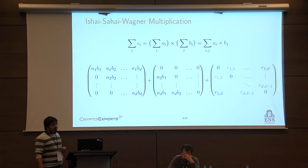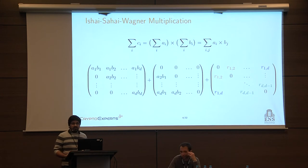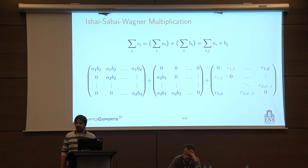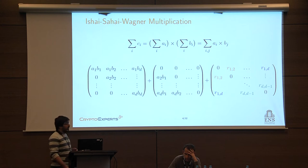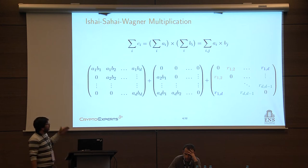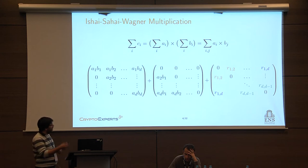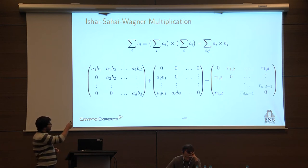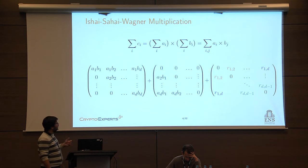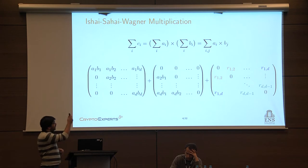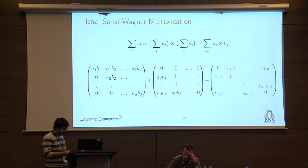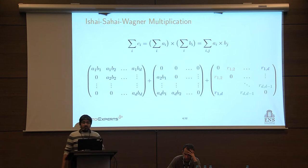In 2003 at Crypto, Ishai, Sahai, and Wagner proposed a secure scheme to perform secure field multiplication between two masked variables. As François-Xavier explained, when you want to perform the product between A times B, you can see it as a matricial equation, and you can compute first the cross-product between A and B, add to it some random values, such that the output will be the sum of these operations. This secure scheme is the main building block when you want to design S-boxes.